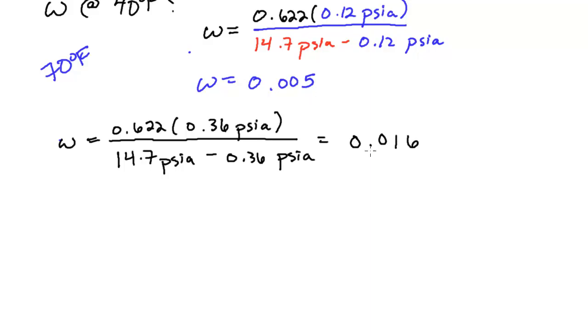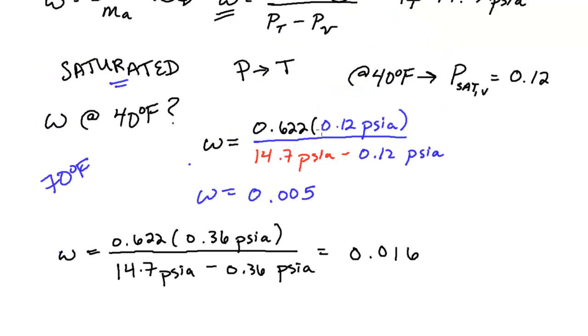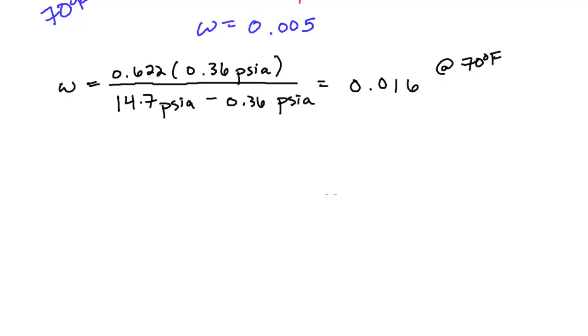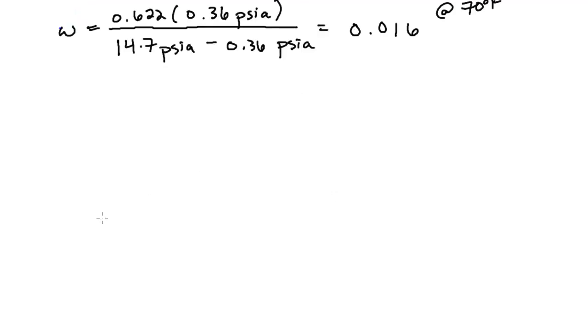So three times as much. The air can hold three times as much moisture at 70 degrees F saturating than it can at 40 degrees. And so what you can actually do, and this is something you'll see on the psychrometric chart when we get to that,